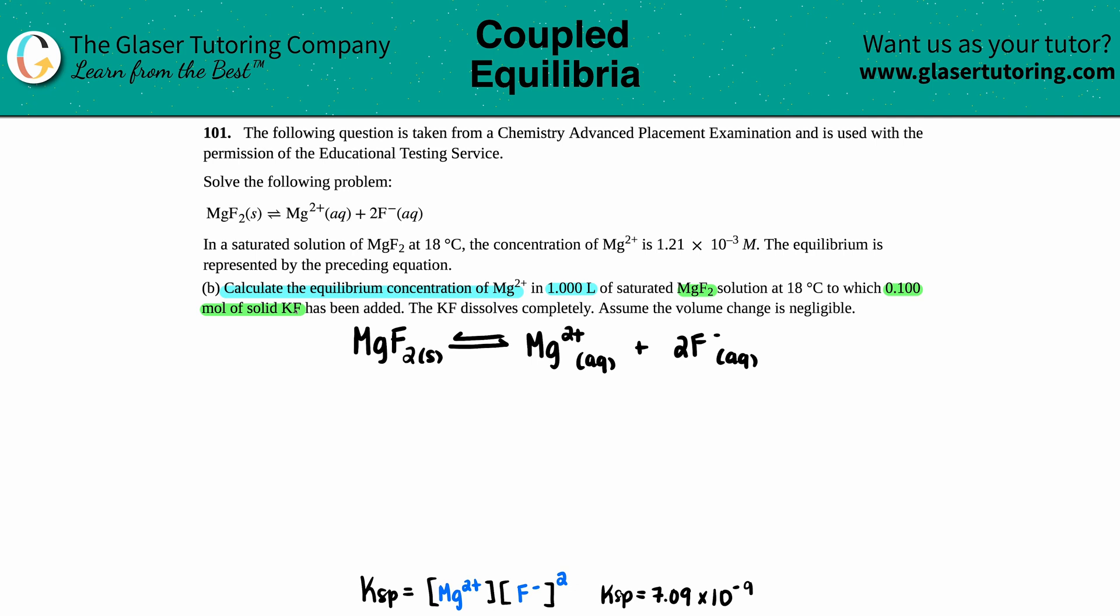I did write the information that we found out from part A. If you haven't watched part A and want to find out how we got these values in this equation, just go back to part A on the playlist and that will be explained. For now, we have to find the equilibrium concentration of Mg2+, and they told us that 0.1 moles of KF has been added.